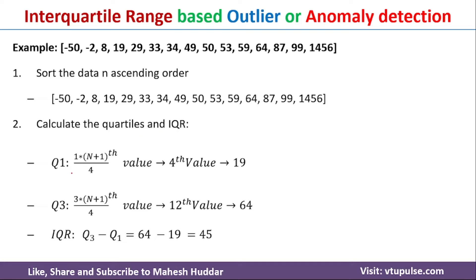In the second step, we need to calculate two values: Q1 and Q3. Q1 is the 25th percentile value and Q3 is the 75th percentile value. Q1 is calculated using the formula: 1 times (n+1) divided by 4. With n equal to 15, that gives (15+1)/4 = 16/4 = 4. So Q1 is the 4th value in the given dataset.